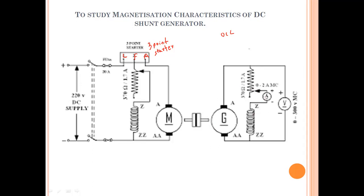The field winding of the generator is connected in parallel to the generator. There is no need to insert a rheostat in this part of the experiment. To measure the voltage induced in the generator, a voltmeter is connected in parallel to the generator. To measure the field current, an ammeter is connected in series with the field winding.